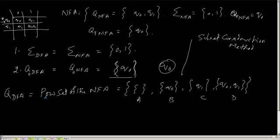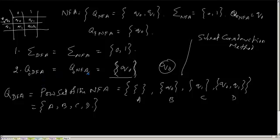Now my Q_DFA is A, B, C, D. What will be my starting state of the DFA? My starting state of the DFA will be the starting state of the NFA — that means the set that contains Q0. So it will be B. B will be my starting state of the DFA.